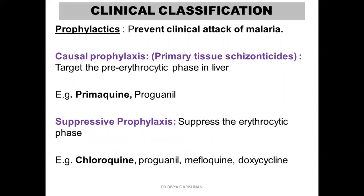Another classification is based upon their use — called the clinical or therapeutic classification. Under this, drugs are categorized as prophylactics, meaning they prevent the clinical attack of malaria. They can be causal prophylactics, targeting the pre-erythrocytic phase in the liver — that is the merozoites in the liver — and examples are primaquine and proguanil. These are also called tissue schizonticides. By targeting merozoites in the liver, the clinical attack is prevented from occurring.